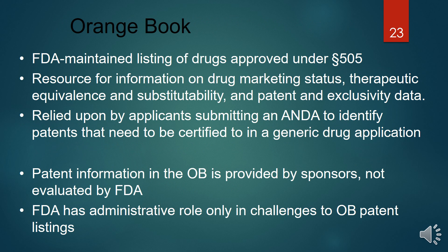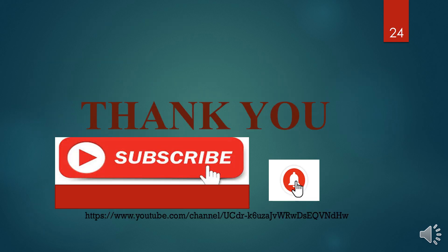In brief, the Orange Book is a database published by the FDA maintaining a listing of drugs approved under FD&C Act. It is used as a resource for drug marketing status, therapeutic equivalence, substitutability, and patent and exclusivity data. Applicants depend on it when submitting an ANDA to identify patents that need to be certified. Note that patent information in the Orange Book is provided by sponsors, not evaluated by the FDA, and the FDA has only an administrative role in challenges to Orange Book patent listings.